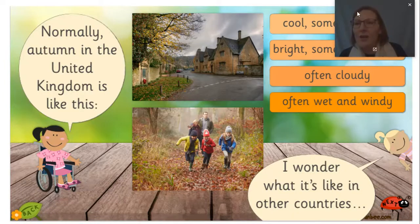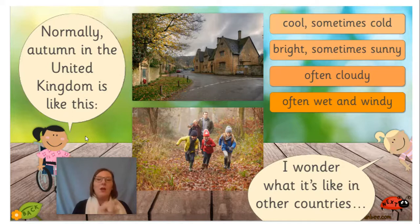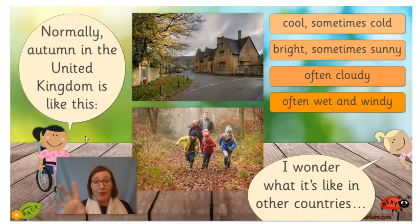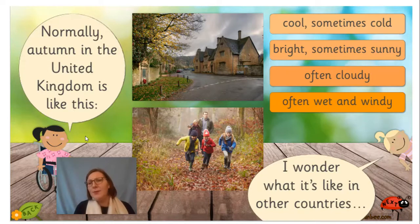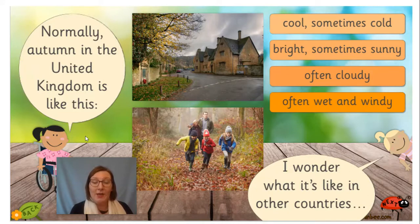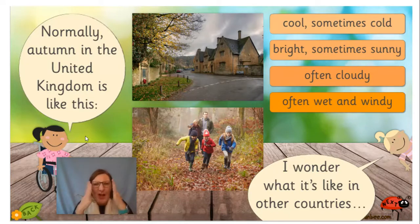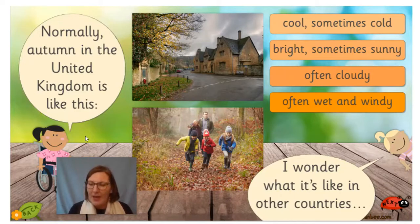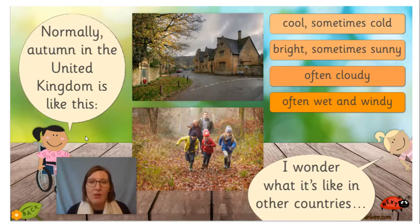In the current climate, think about autumn, for example. In autumn in the UK, it's often cool, sometimes cold. Sometimes it's bright and sunny, but often it's cloudy, and often it's wet and windy. All the leaves come down off the trees. It becomes quite grey and dark in the skies. It gets darker earlier as well. We definitely need to wear hats, gloves, and scarves when coming to school.